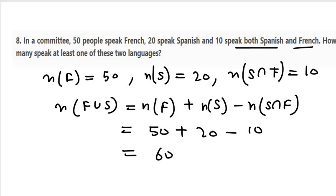So the number of people who speak at least one of these languages is 60. That's your answer for question number 8 and the end of exercise 1.6. Thank you.